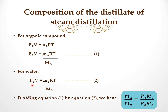Similarly for water, we get PB times V equal to MB times RT over MB. Dividing equation 1 by equation 2, we will have the formula: mass of A divided by mass of B equals PA times MA divided by PB times MB.